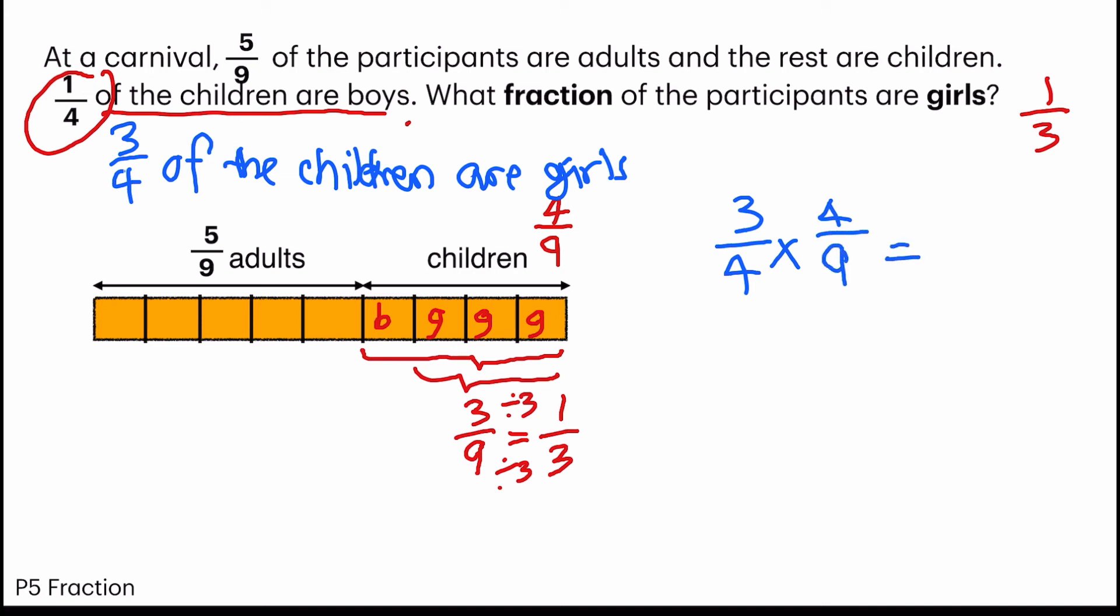So I'm going to solve this fraction of multiplication. To cancel, cancel, I get 1 and 1. 3 times 1 is 3. 1 times 9 is 9. Ultimately, I will get 3 9 again. And my answer is 1 third. So that is how you solve the questions using model and multiplication.